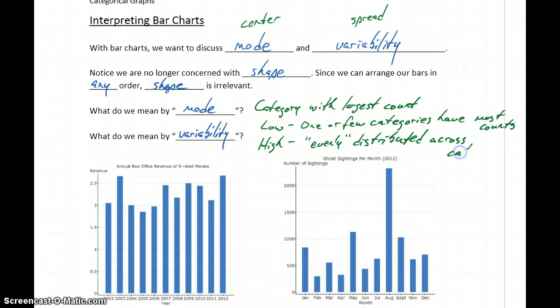So there's no one category that has all of the counts, no one category that has almost no counts. We have something where each category is sort of equally represented.